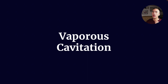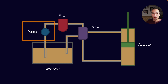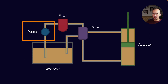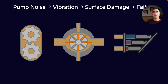Let's talk about how water can contribute to the causes of vaporous cavitation. Typically, you see this in an area where the lubricant is compressed — generally in a pump or a compressor. You'll definitely notice when cavitation is occurring, because you'll have pump noise, which leads to vibration, surface damage, and ultimately failure.